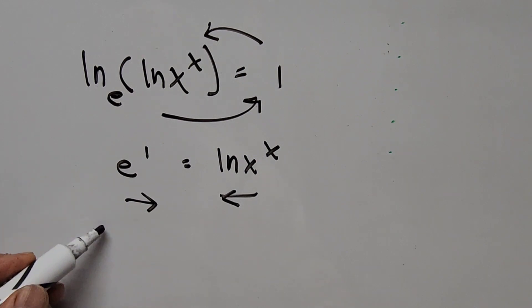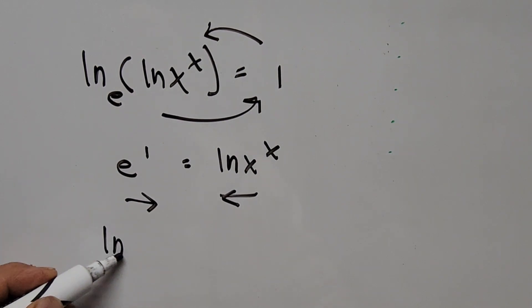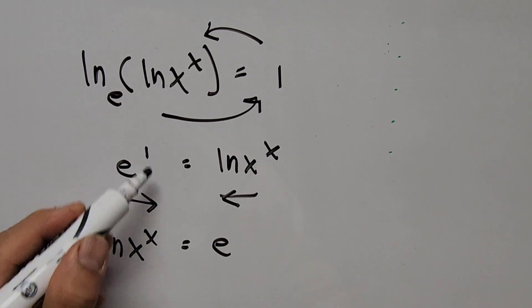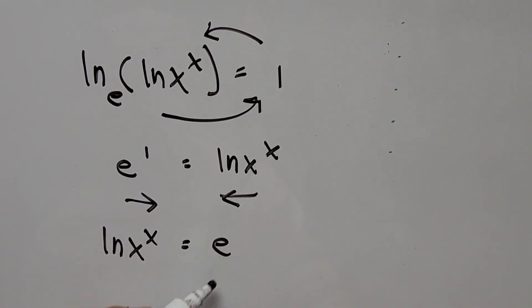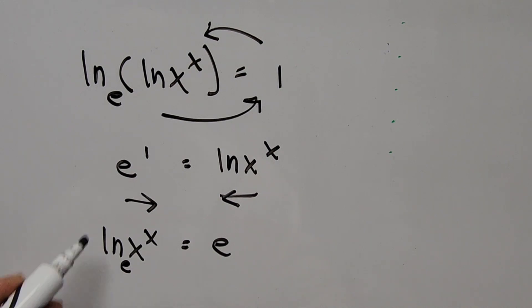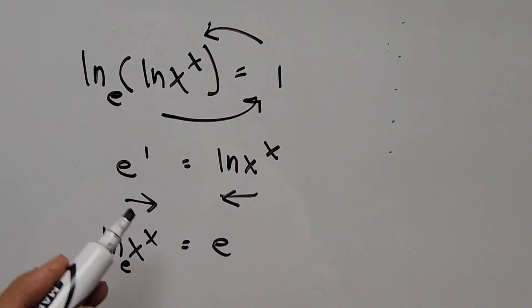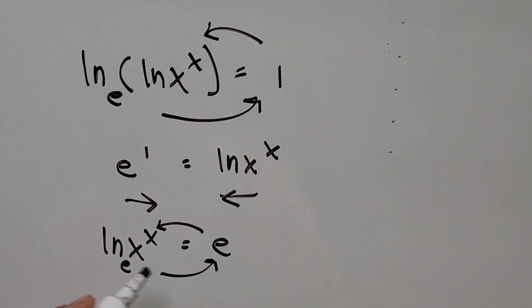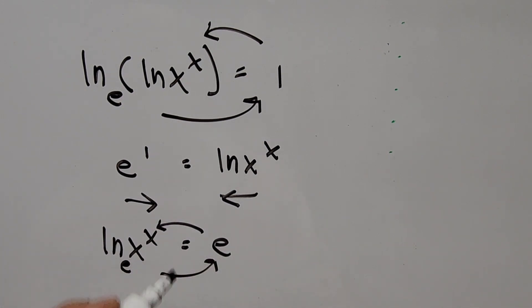We move the variable x to the left and the constant to the right, giving us: natural logarithm of x to the power of x equals e to the power of 1, which is e. Once again this is base e, so we transform this again into exponential form, following the arrow in the counterclockwise direction.